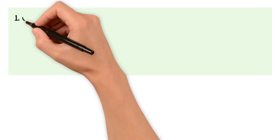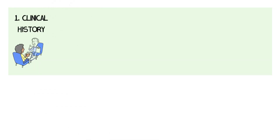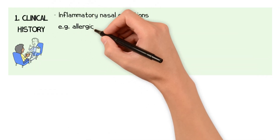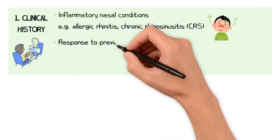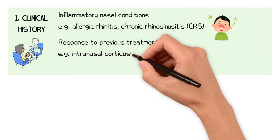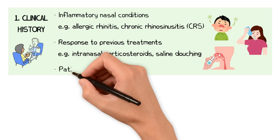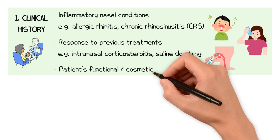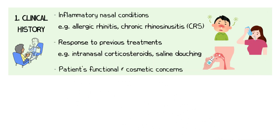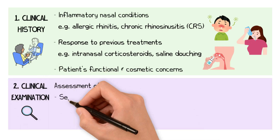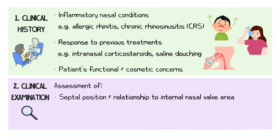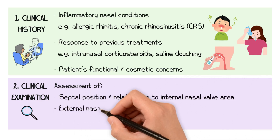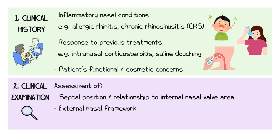A thorough assessment begins with a full clinical history, particularly evaluating any inflammatory nasal conditions such as allergic rhinitis or chronic rhinosinusitis, the patient's response to previous treatments including intranasal corticosteroids and saline douching, and the patient's functional concerns such as nasal obstruction and cosmetic concerns relating to the nasal deviation. Clinical examination involves assessment of the septal position, particularly in its relationship to the internal nasal valve area, assessment of the external nasal framework, and in particular nasal tip position and support.